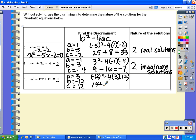(-12)² is 144 minus 4 times 3 is 12, 12 times 12 is again 144. So 144 - 144 = 0, therefore I will have one real solution.